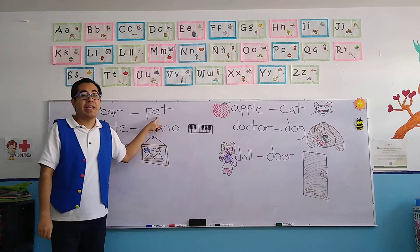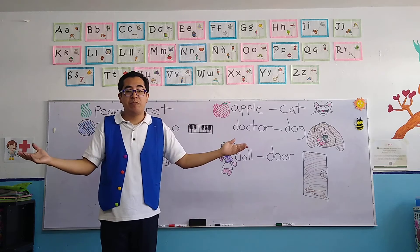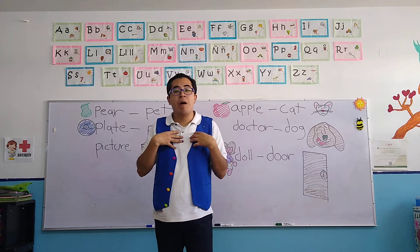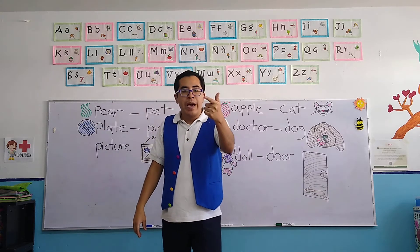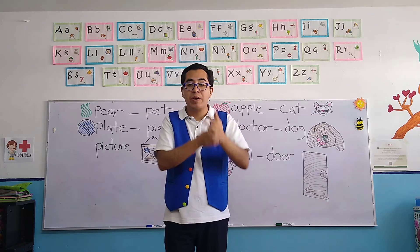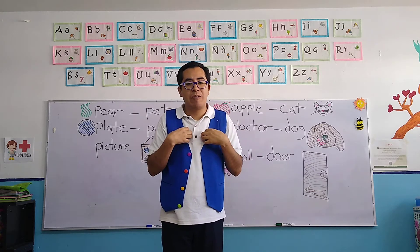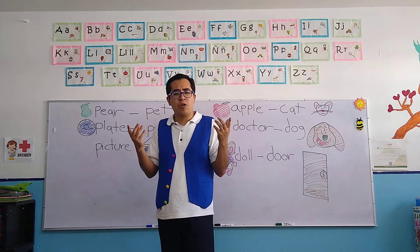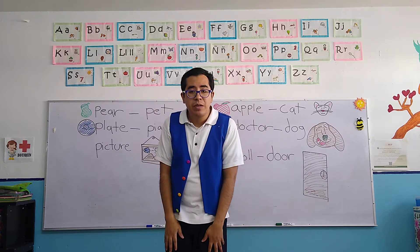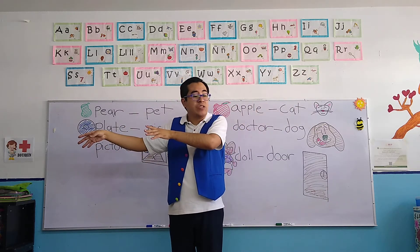Let's continue with PET. Here for PET, I don't have a drawing because there are several pets. Remember the PET? It's an animal that lives in our house. Pets are like dogs, cats, mouse — another pet. A turtle can also be a PET. Those are mascotas, animals that live in our house. For example, a horse — is a horse a pet? No, because a horse is too big. It belongs to another place, not in a house.